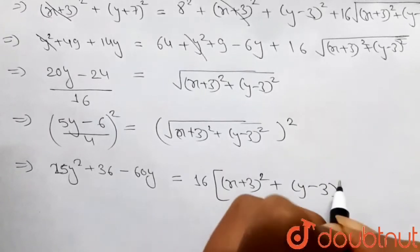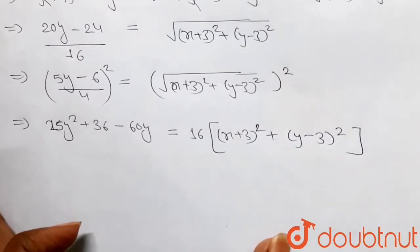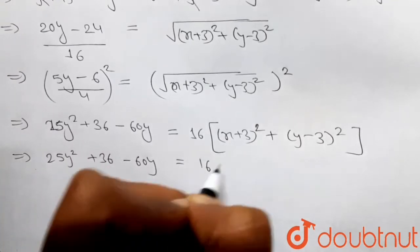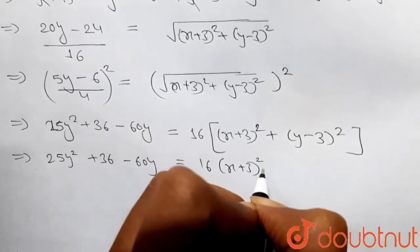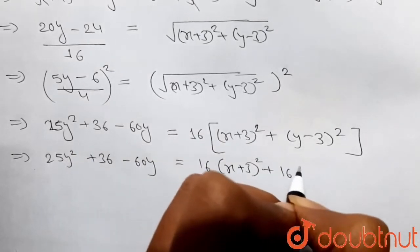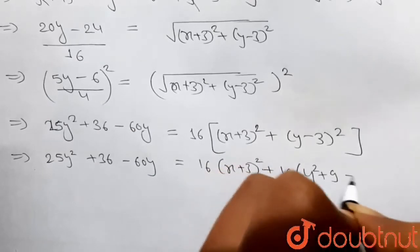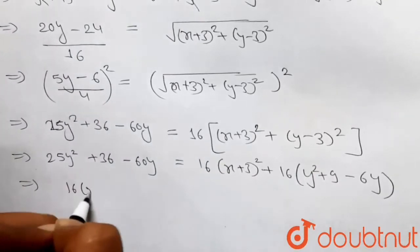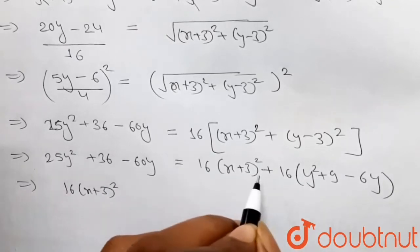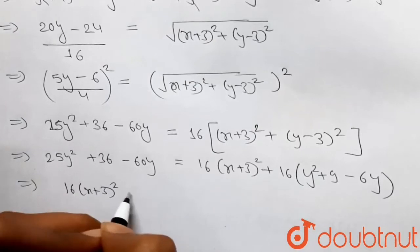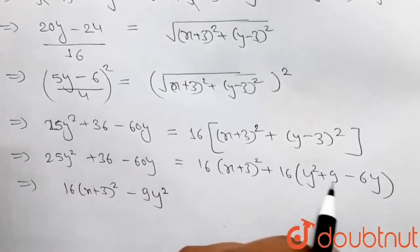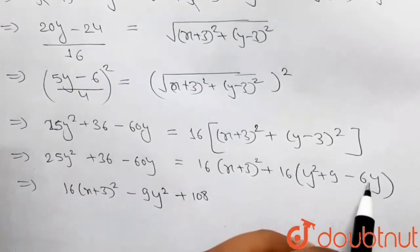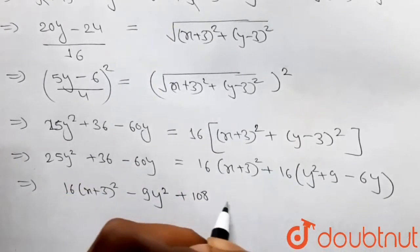Expanding the right side: 16(x+3)² + 16(y² + 9 - 6y). Bringing 25y² to the right: 16y² - 25y² = -9y². Then 16×9 - 36 = 108, and combining y terms: 16×6y - 60y gives -36y. So we get 16(x+3)² - 9y² - 36y + 144 - 36 = 0.